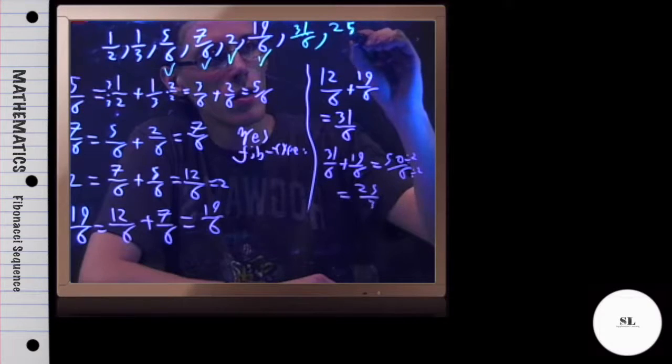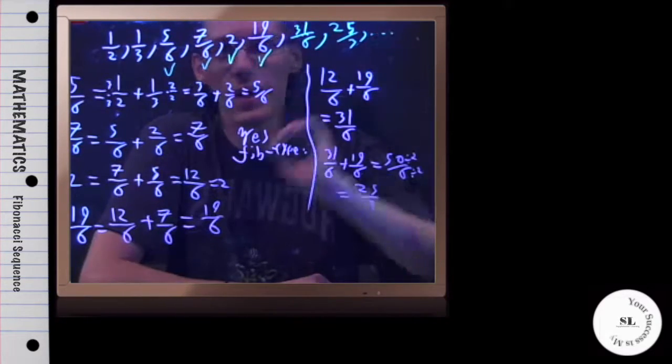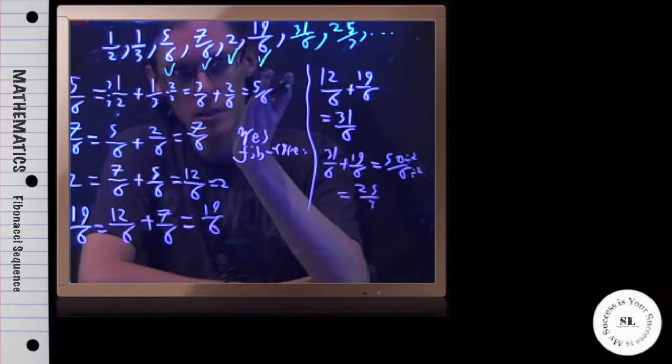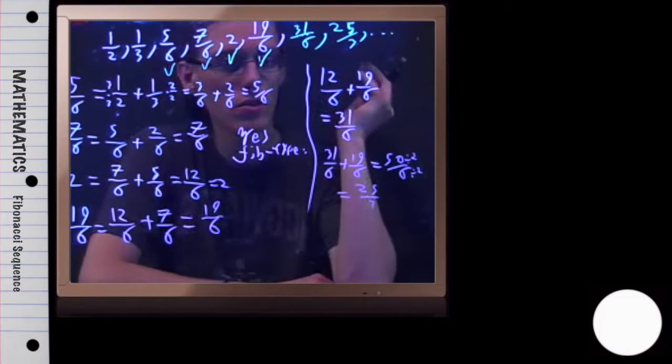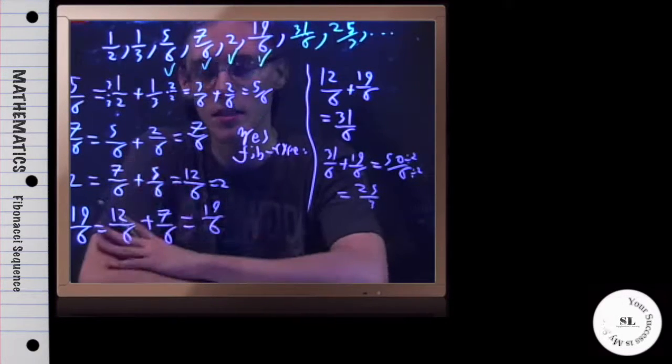And of course, if you're bored, you can carry on and do more. But for now, we're going to stop right there. This is a Fibonacci type sequence. And the next two terms are 31 over 6 and 25 over 3. And that is this example.